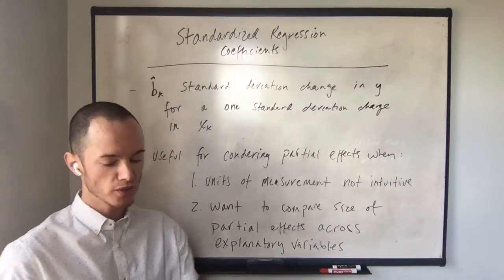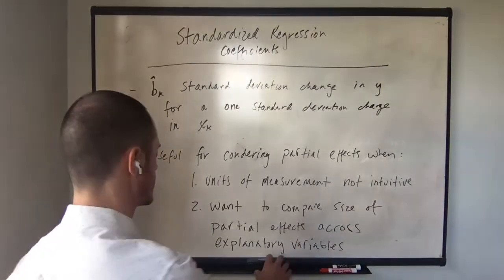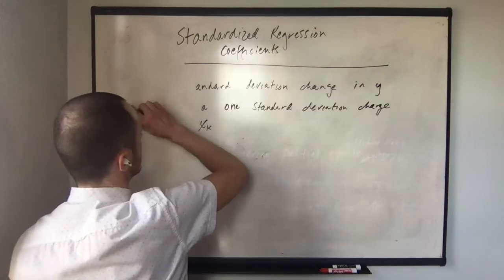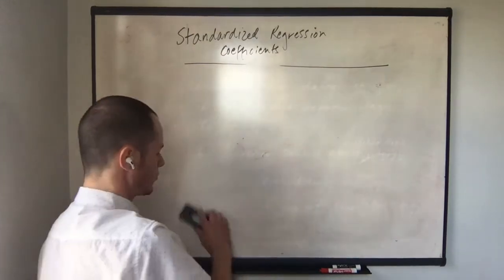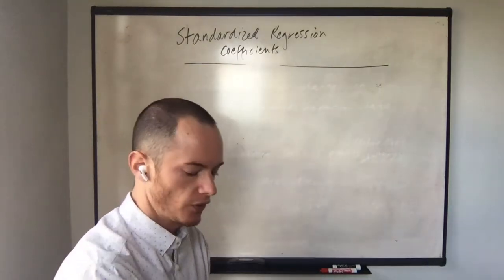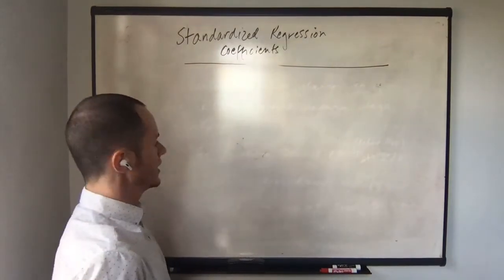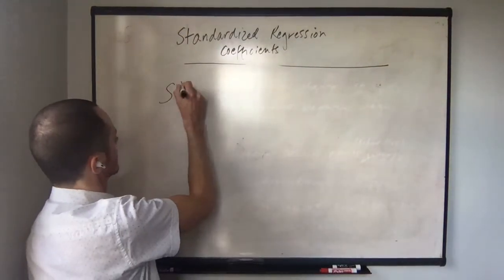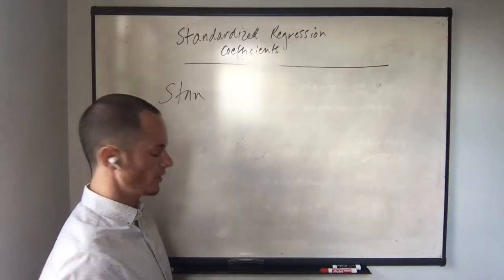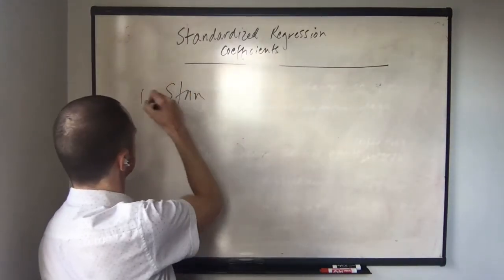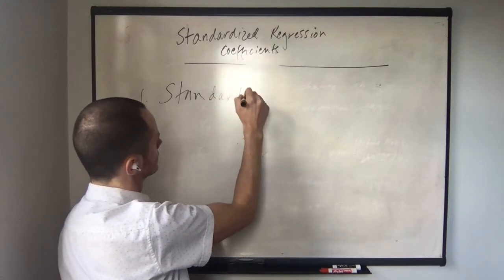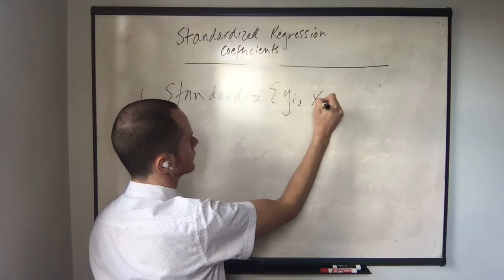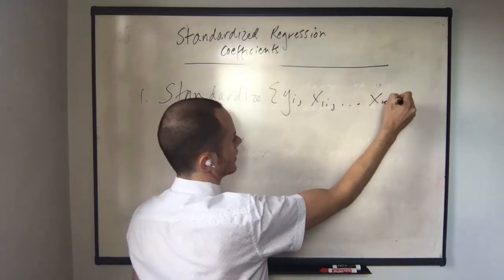There are two different ways to calculate a standardized regression coefficient, and we're going to discuss both. The first way is to standardize y and all of your x variables — x1i through xki.